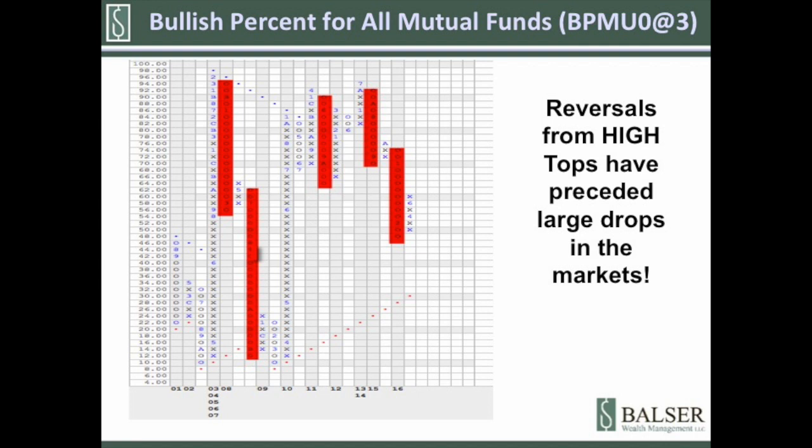The first of my three long-term indicators is the bullish percent for all mutual funds. It may seem crazy to get a long-term indicator from mutual funds, but this indicator gives us a long-term picture of money in motion. The bullish percent is the percent of charts in the universe — whatever universe you're looking at — on buy signals. The chart you're viewing now is a bullish percent for all equity mutual funds. The numbers you see on the left is a percentage of equity mutual funds on point-and-figure buy signals.